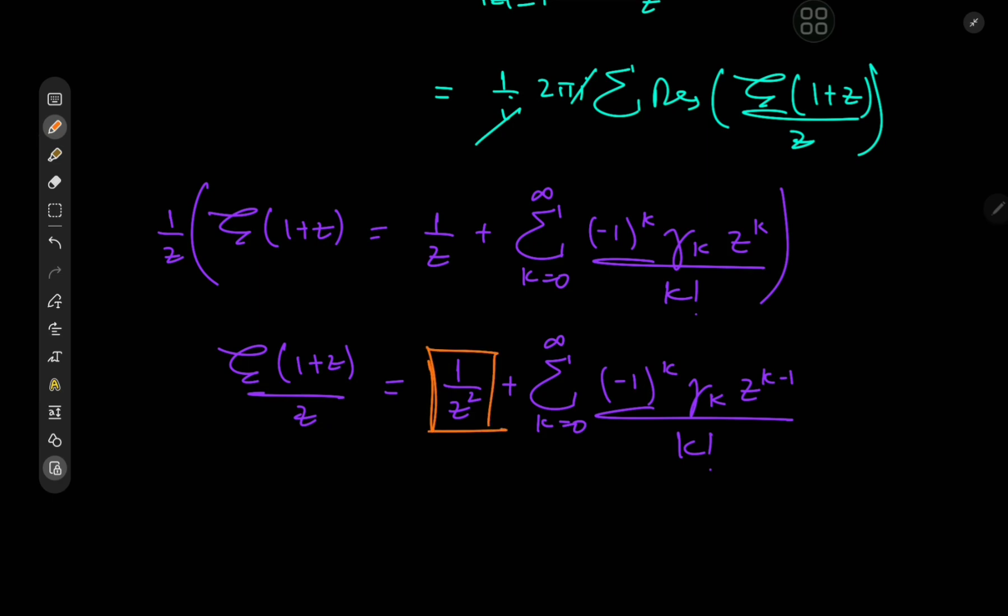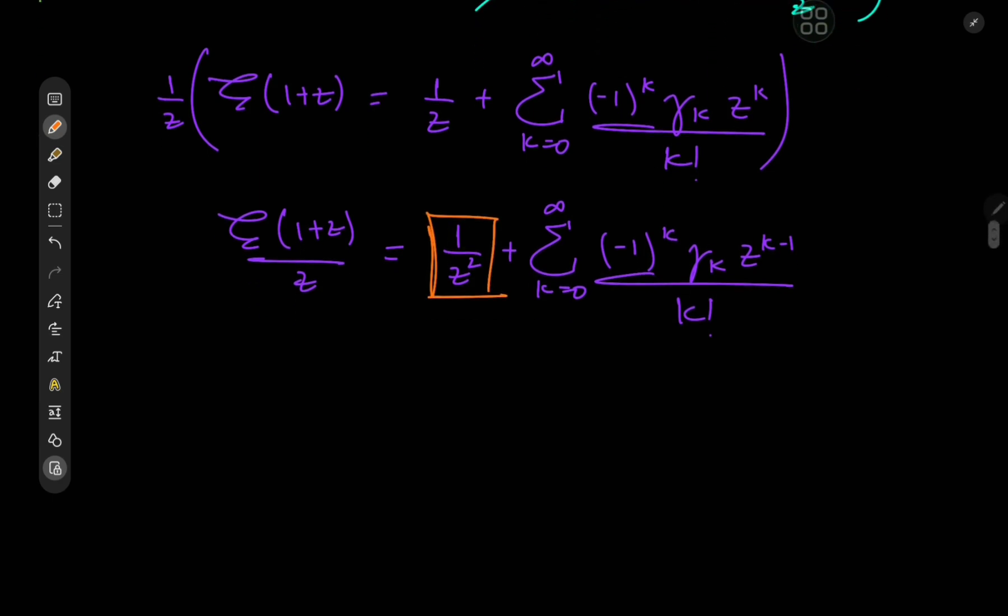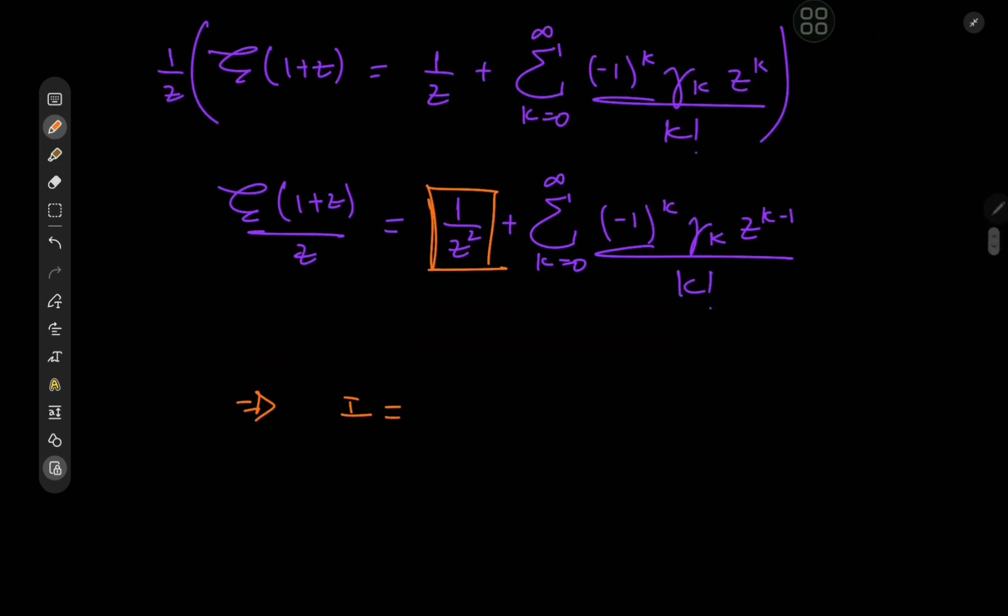And we see that there is only one pole to worry about, and that is the one at z = 0. We see that this is a pole of order 2. So this implies that the target integral i equals, the i is cancelled out,